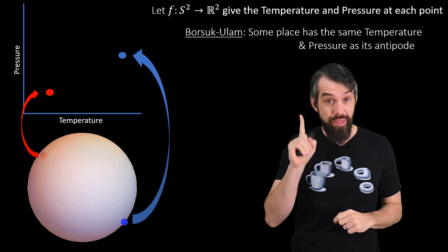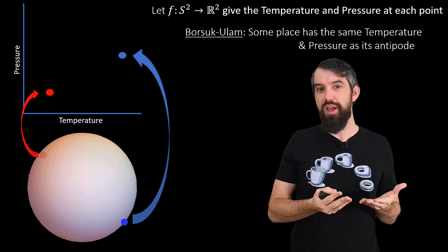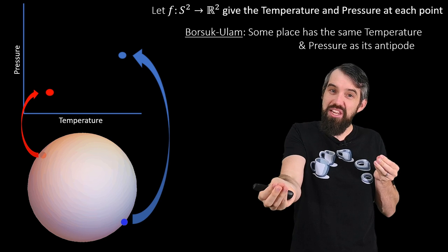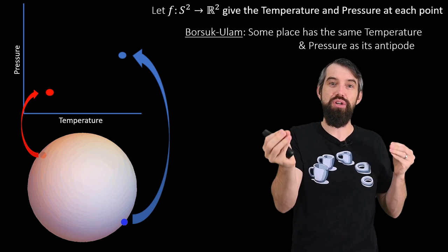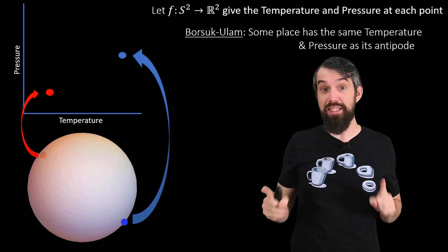Then the Borsuk-Ulam theorem says that there exists some spot where that spot and its antipode had the exact same temperature and pressure. So the claim here is an existence claim.